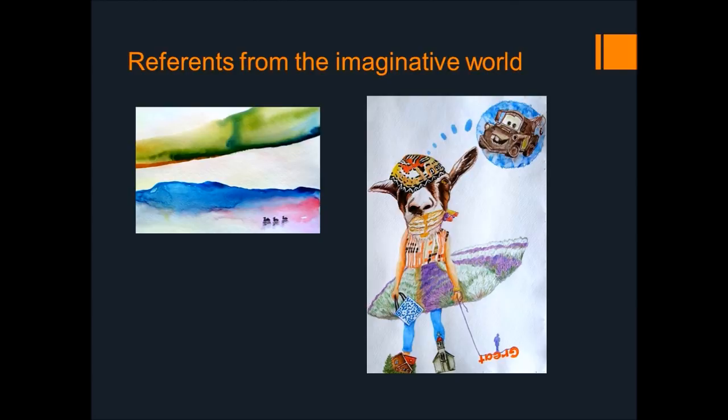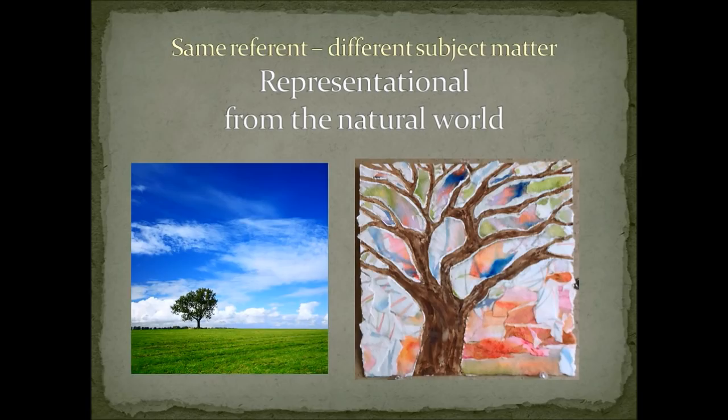Is it possible to see the same referent used in different subject matter? Actually it is. Let's look at some examples of a tree used as a referent. Artwork that is representational always has a referent. We apply the term 'representation from the natural world' to a wide range of realistic artwork. Here's an example of a photograph that is highly realistic and a collage that uses abstraction to manipulate reality. The referent of the tree is recognizable in both examples.